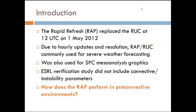As most of you know, the Rapid Refresh replaced the RUC last year. It took effect on May 1st. Usually due to its hourly updates and resolution, we've been using formerly the RUC and now the RAP for severe weather forecasting, especially since you get those new updates every hour. The resolution overall is really useful for severe weather. It was also used for SPC's mesoanalysis graphics. I just got an email a few days ago that they've updated now to a new version of the RAP.